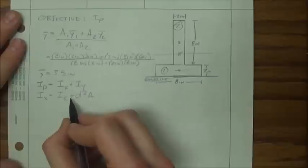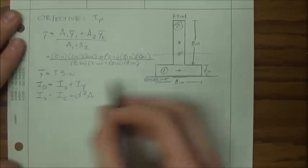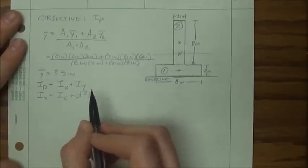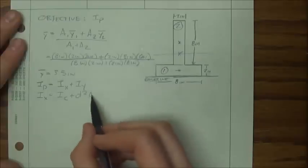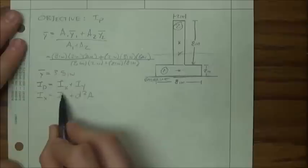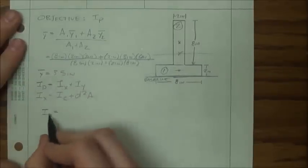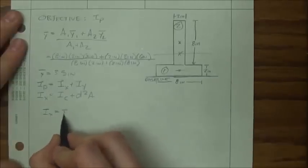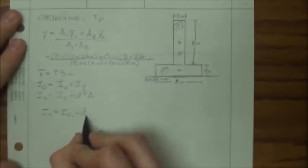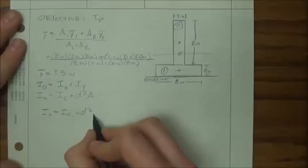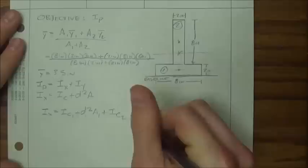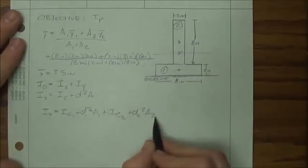The parallel axis theorem: the moment of inertia through our desired axis equals the moment of inertia through an object's own centroid plus d-squared times the area of that object, where d is the distance between the desired axis and that object's centroid. A common mistake is to add the area of all the objects — but this formula applies per object. So for IX total, we apply the formula to object 1, then add the same formula applied to object 2, with different distances and areas.